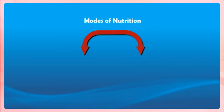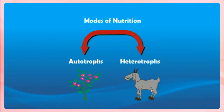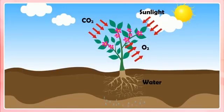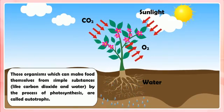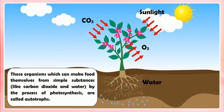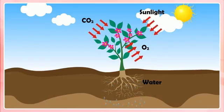Modes of Nutrition. All the organisms can be divided into two main groups: Autotrophs and Heterotrophs. Autotrophs are those organisms which can make food themselves from simple substances like carbon dioxide and water by the process of photosynthesis. Their mode of nutrition is called autotrophic.